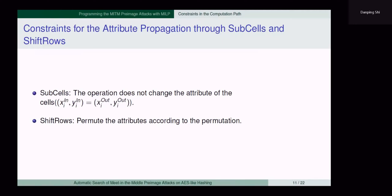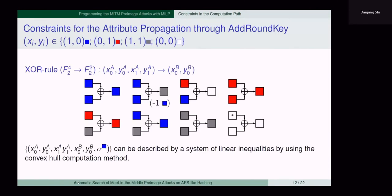x equals 1 if and only if the cell is gray or blue, and y equals 1 if and only if the cell is gray or red. Thus, the initial degrees of freedom can be computed by these two equations. We then add constraints over these variables according to the basic rules of attribute propagation. Rules for the two directions are different, since the meanings of red and blue cells are dual for forward and backward computations. I will describe the attribute propagation rules for the backward chunk computation. SubCells does not change the attributes; ShiftRows permutes the attributes according to the permutation.